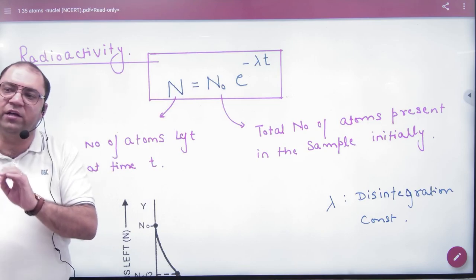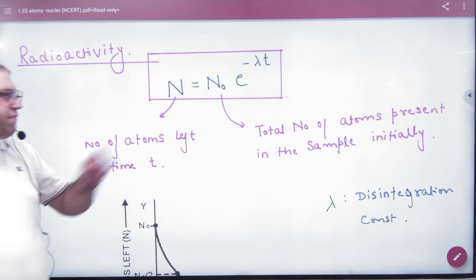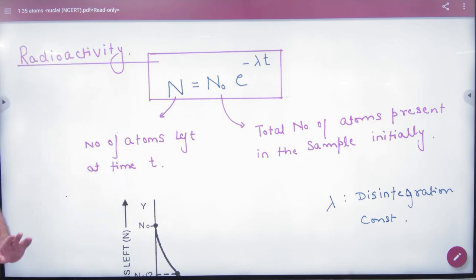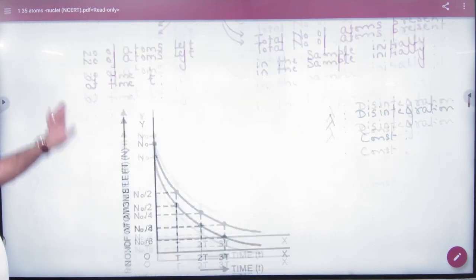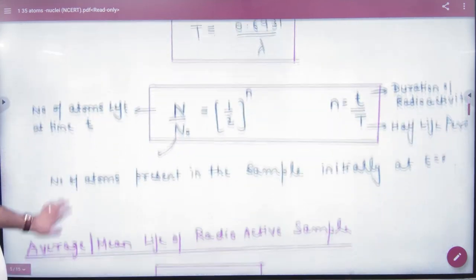You will be asked for the number of atoms left in time t, and you will answer with this formula. Lambda is the disintegration constant. We have told you what to do in the graph.